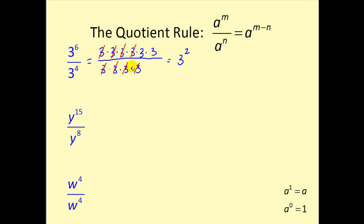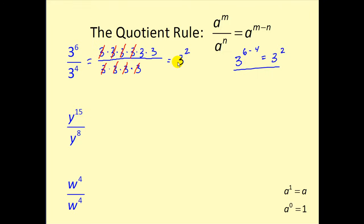Using the quotient rule, we could have just recognized that the bases were the same and simplified to three to the power of six minus four, which gives us three to the second. But if we don't understand why this rule works, it's best to expand it and simplify it the long way.